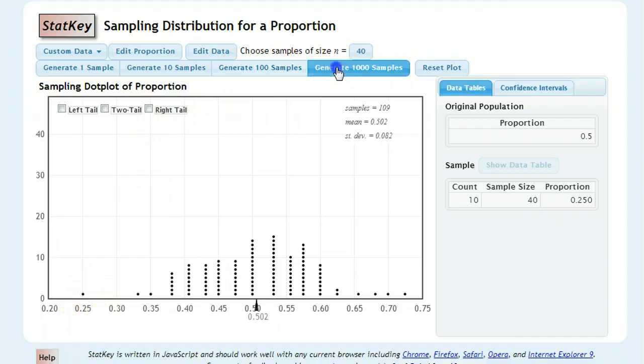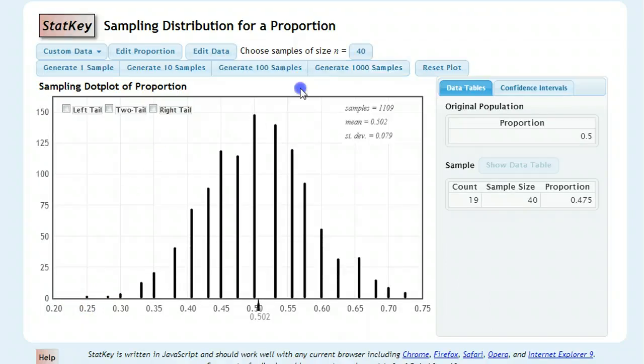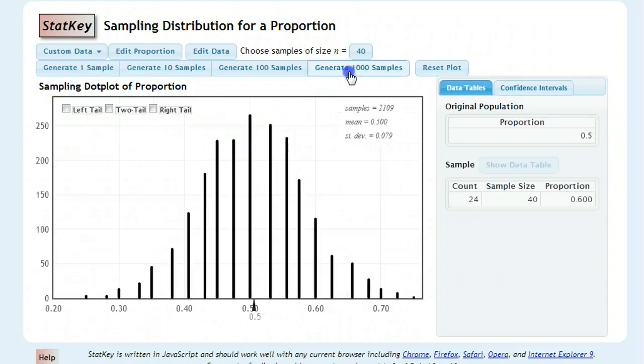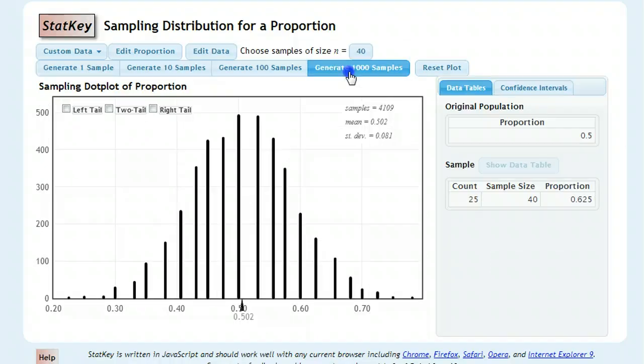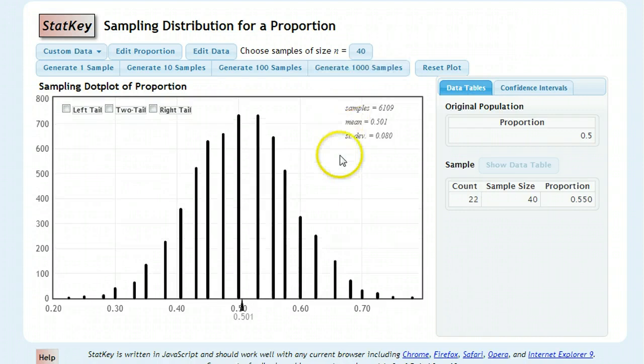Generate 1,000 samples. Hmm. Okay, so now our most common is 20 out of 40. Kind of what we would expect, because the population says it's half. So the biggest, most likely sample would be that. Keep generating thousands and thousands of samples. And you can see that we start to get this very well-defined pattern. And if any of you recognize this curve, it looks very much like the normal curve.